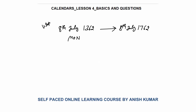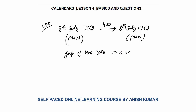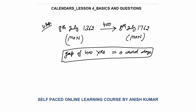Now the very important concept: 8th of July 1362 is Monday — what will be the day on 8th of July 1762? This is exactly a gap of 400 years. Very importantly, same date to same date with a gap of 400 years, there will be zero odd days, so the day will be the same. I will calculate this with you.